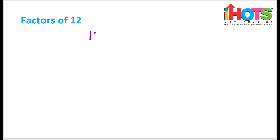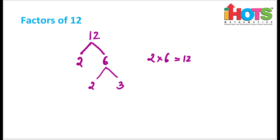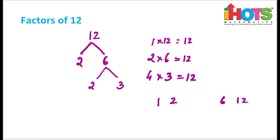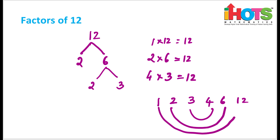Now let me find the factors for 12. When you divide 12 by 2, it is 2 into 6. Again, 6 splits into 2 into 3. So this is 2 into 6 equals 12, and 2 into 2 gives 4 into 3, which is also 12. We also have 1 into 12. Writing it down: 1, 12, 2, 6, 3, 4 — you can see the rainbow pattern.